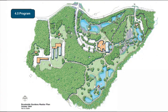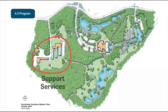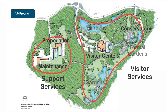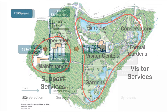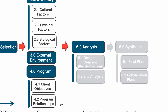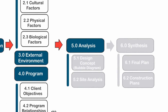Programmatically, at Brookside Gardens, there are two main program areas. There are support services, including maintenance and propagation facilities. Second are visitor services, which include the conservatory, visitor center, and gardens. The analysis phase seeks to integrate the relationships identified during the survey phase.